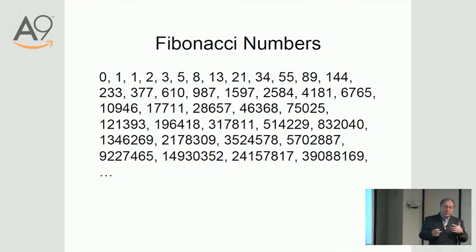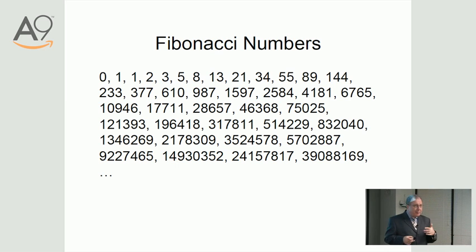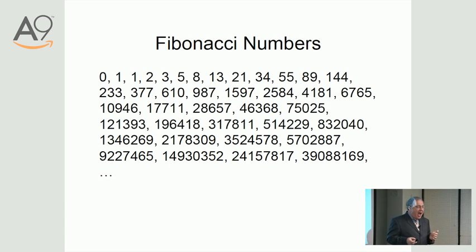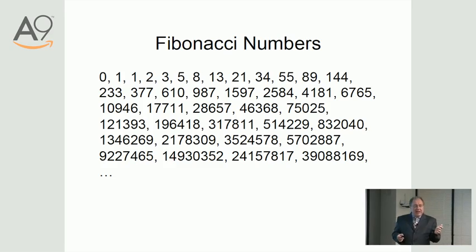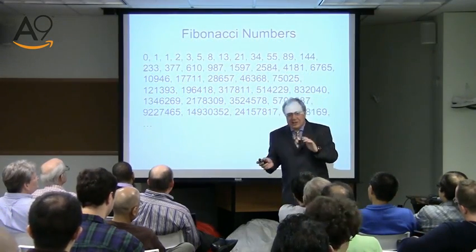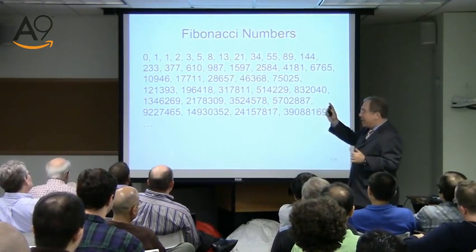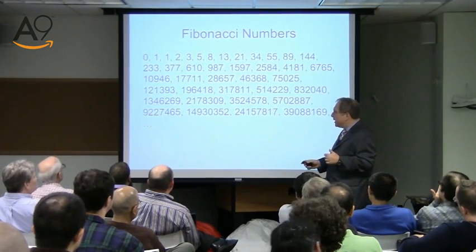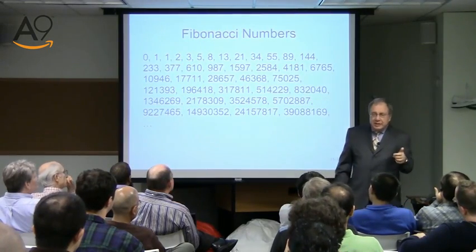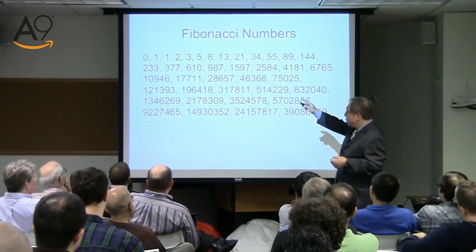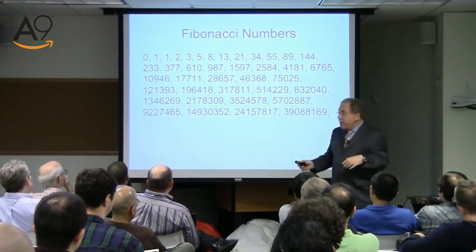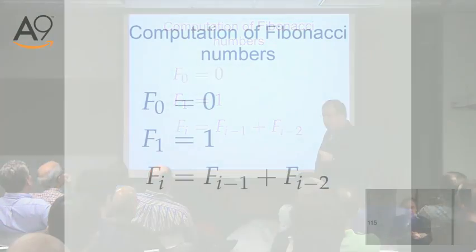The first problem: I am certain all of you have heard of Fibonacci numbers, and some of you might have heard the origin — how somebody wanted to breed rabbits and came up with the sequence. We will encounter Fibonacci himself in our third journey. These are the sequence: 0, 1, 1, 2, 3, 5 — many, many numbers that go on forever, based on a very simple recurrence.